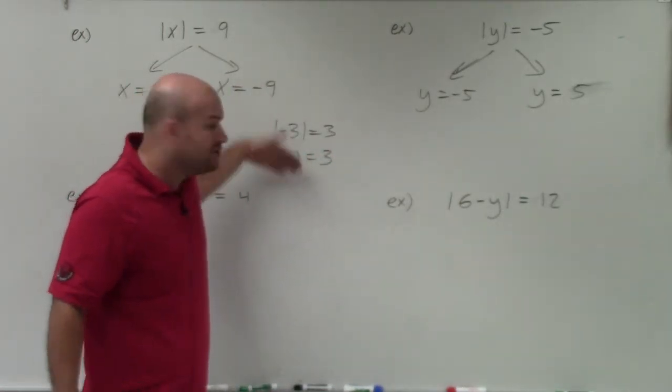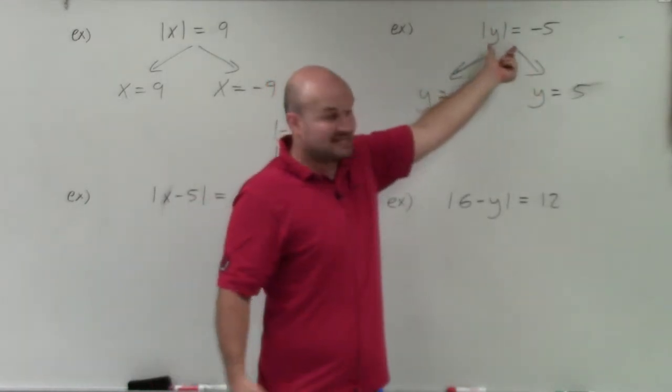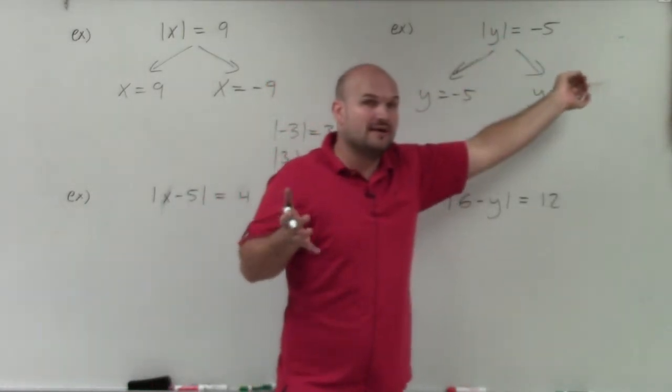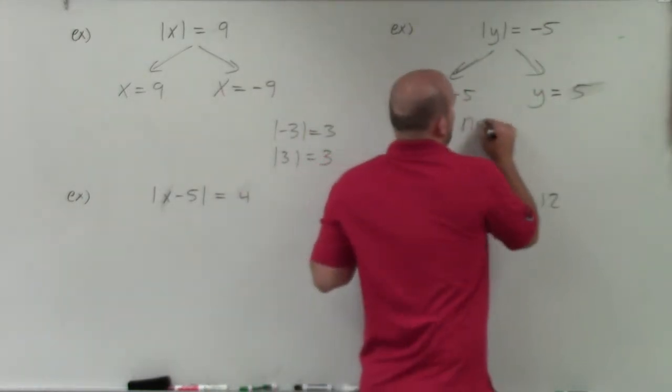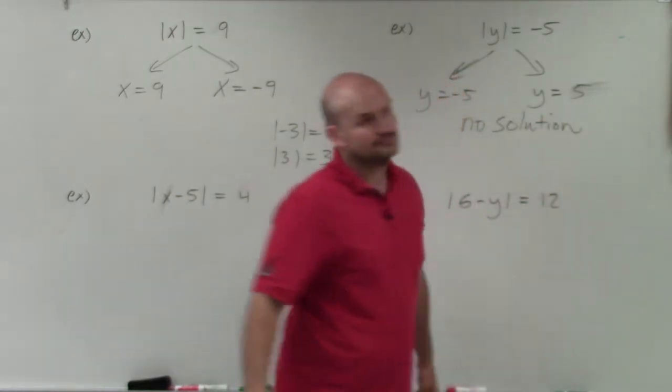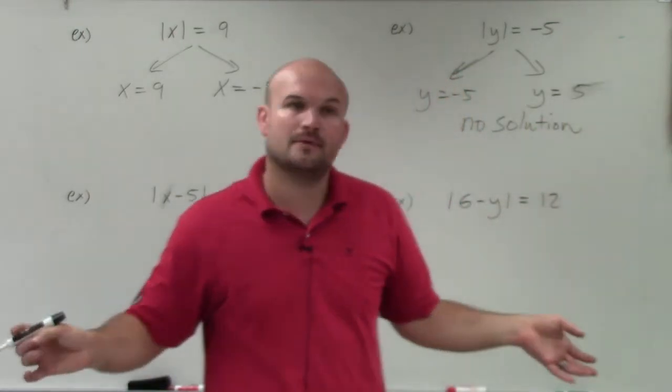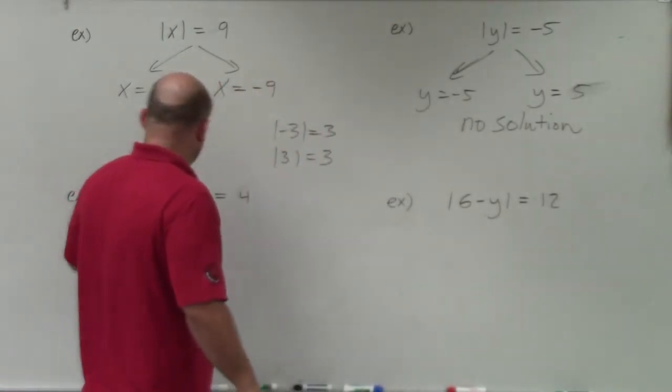When you take the absolute value of a number, you cannot get a negative number. So if you have the absolute value isolated, absolute value is equal, and it's equal to a negative number, you have no solution. Simple as that. And we'll get into more difficult ones in another video.